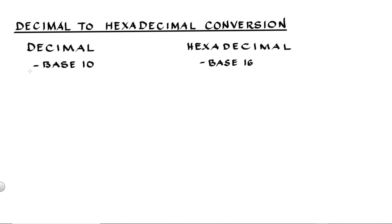Hello, this is Pingpoint. In this video we will talk about how to convert a decimal number into a hexadecimal number. The decimal number system is also called base 10, using digits from 0 to 9.